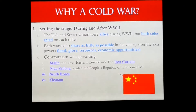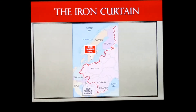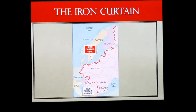Communism was spreading: Stalin took over Eastern Europe with the Iron Curtain, Mao Zedong took over China, and communists won their revolutions in North Korea and Vietnam. Here's a picture of the Iron Curtain — to the right of that red line are the communist countries, and to the left are the non-communist countries.